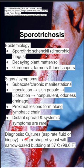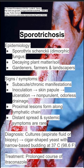The diagnosis is actually made from cultures. You either want to aspirate fluid or biopsy one of the lesions, and under the microscope you'll see cigar-shaped yeast with narrow-based budding at 37 degrees Celsius. The treatment is a prolonged course of itraconazole.